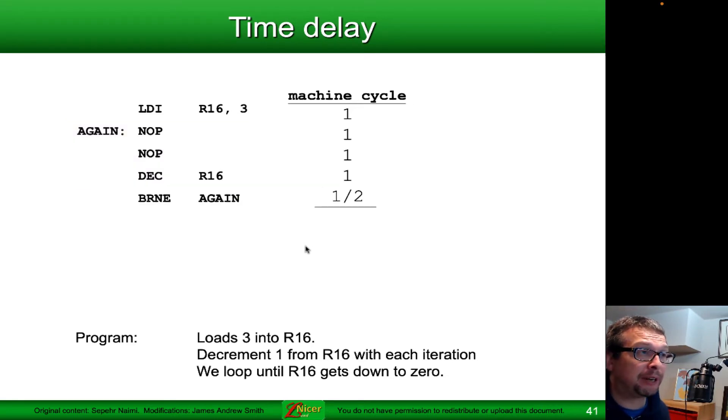Let's take a look at a different example. This is the loop right here. We're going to be branching, if not equal, back to the again label. We load in a value of three into R16 initially. That's outside of the loop. We're going to put that increment value or the number of loops to be three. So we go into the loop, which is in pink.